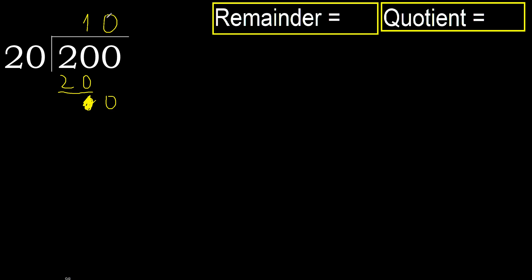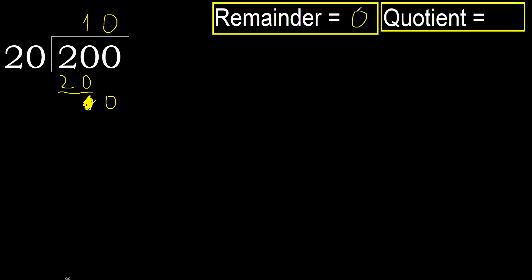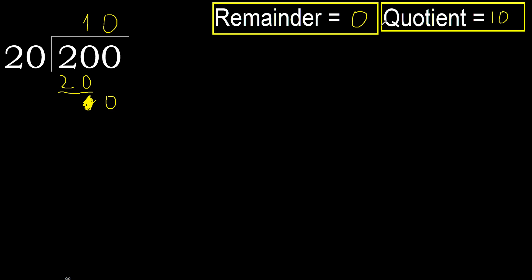Therefore complete. Always complete with 0 — complete because we finished with this number. 200 divided by 20 is 10.